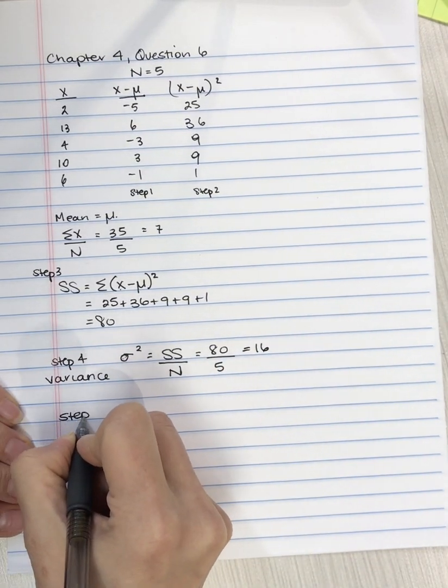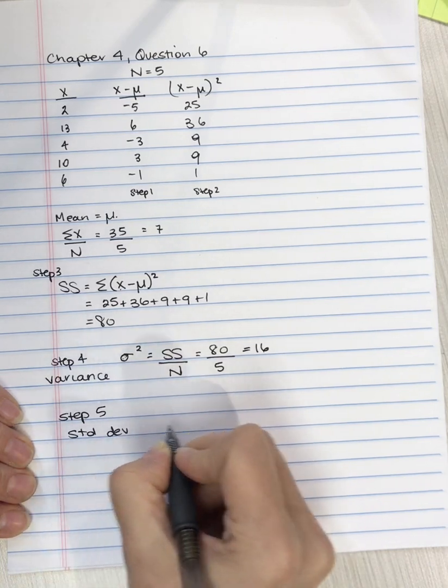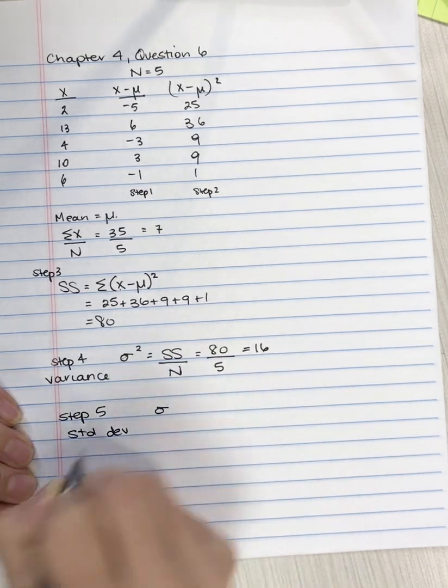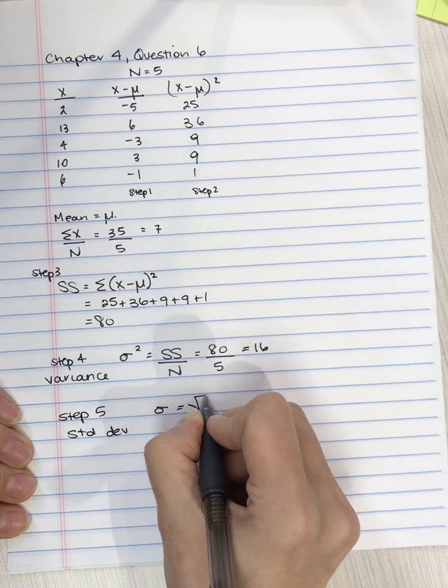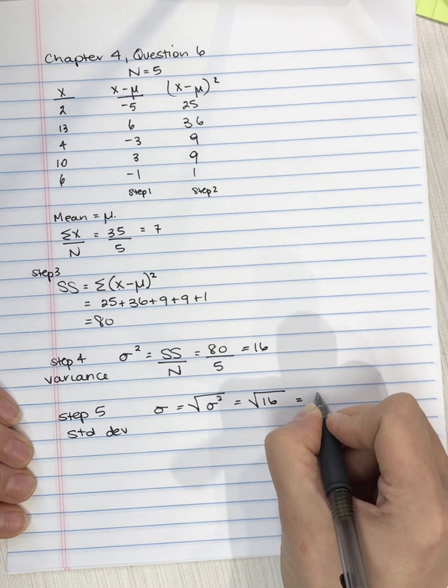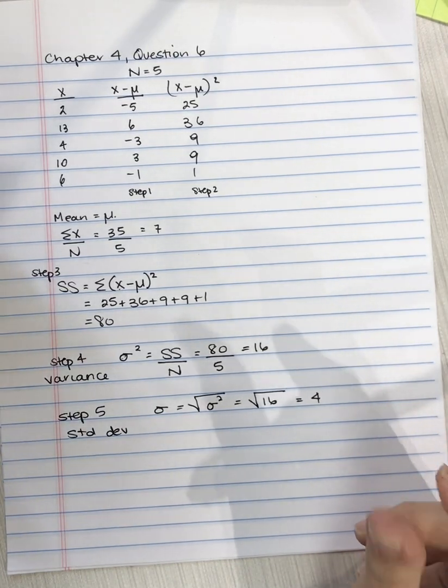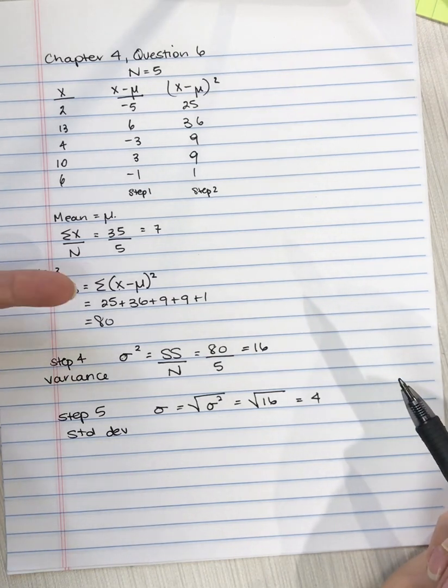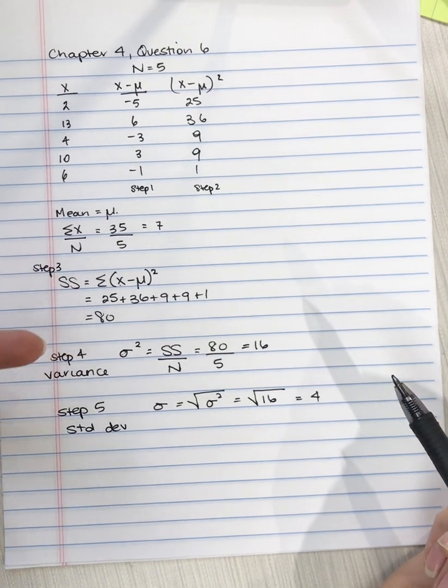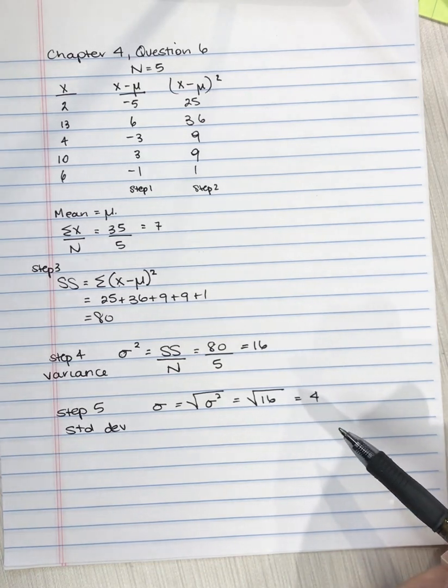For step 5, this is where we calculate the standard deviation, and this is our last step. So sigma, which is equal to the square root of sigma squared. So the square root of 16, which is 4. So to answer each of the pieces of the question, the sum of squares is 80, the variance is 16, and the standard deviation is 4.